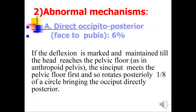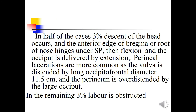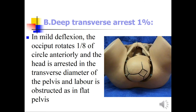In six percent of cases the head will remain face to pubis, or direct occipital posterior. In three percent of these cases, the head descends and the anterior edge of the bregma and nose hangs under the symphysis pubis, then flexion occurs and the occiput is delivered posteriorly by extension, with perineal distension. The remaining three percent result in obstructed labor and cesarean delivery.